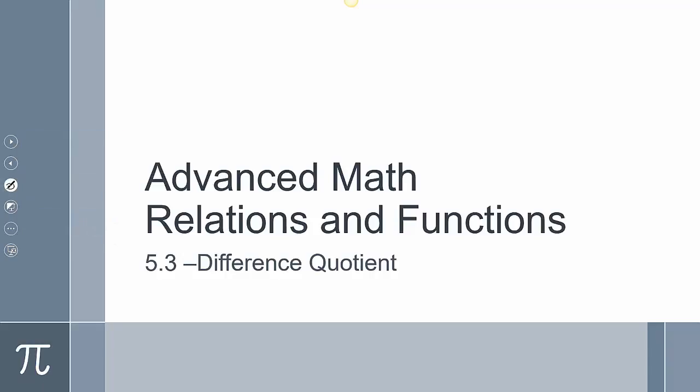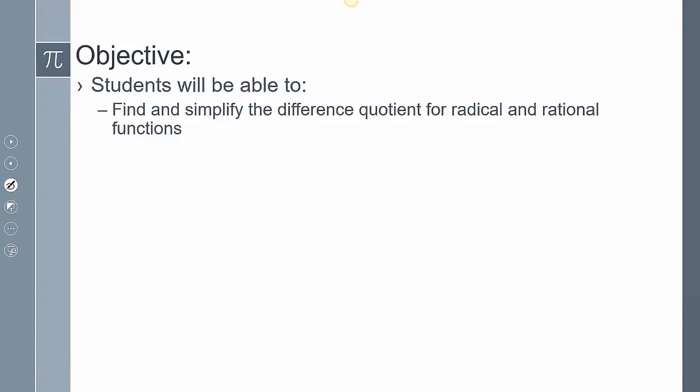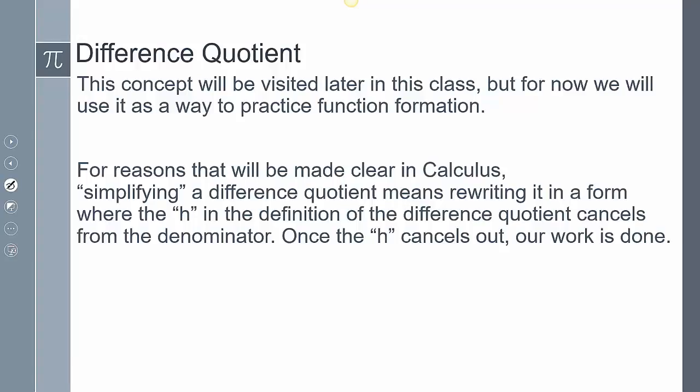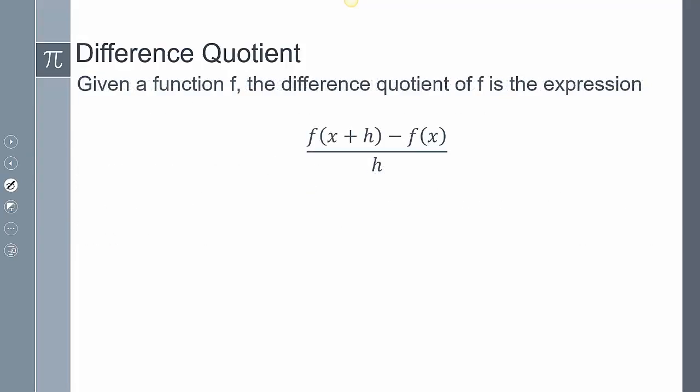Today's topic is 5.3 Difference Quotient. We're going to find and simplify the difference quotient of radical and rational functions. The difference quotient is an important concept from calculus. What we're practicing today is plugging everything into the difference quotient and then manipulating the expression to cancel out that h. The difference quotient is defined as f(x+h) minus f(x) over h. Today we're introducing radical and rational functions, and there's going to be a different way to handle them.